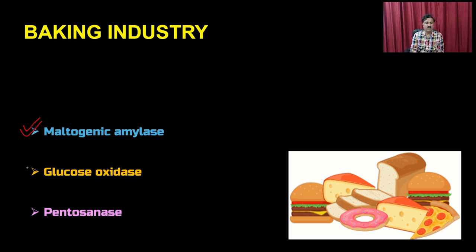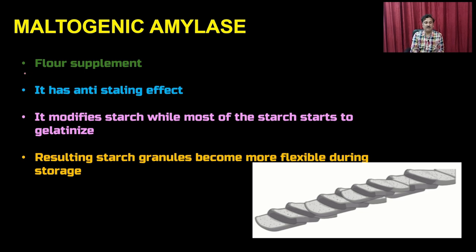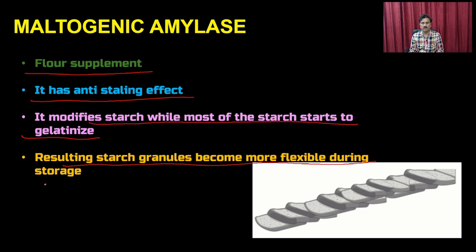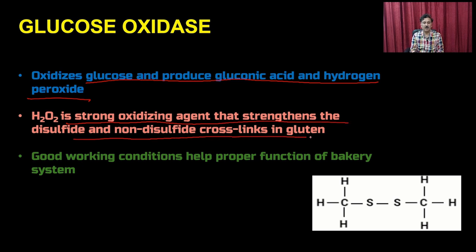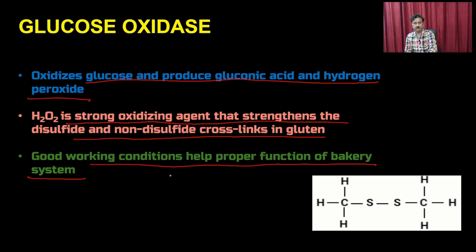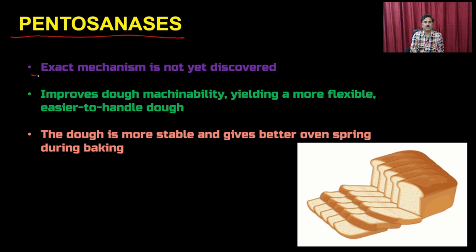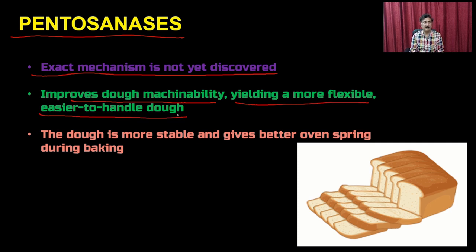In the baking industry, maltogenic amylase acts as a flour supplement with anti-staling effects, modifying starch so granules become more flexible during storage. Glucose oxidase oxidizes glucose to produce gluconic acid and hydrogen peroxide — a strong oxidizing agent that strengthens disulfide and non-disulfide cross-linkages in gluten, improving baking system function. Pentonases improve dough machinability, yielding a more flexible and easier-to-handle dough that is stable and gives better oven spring during baking.